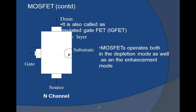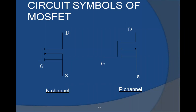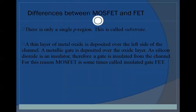MOSFET operates both in the depletion mode as well as in the enhancement mode. This is the circuit symbol of N-channel and P-channel — you can see the arrow marks are opposite to each other; this is the difference between MOSFET and JFET. There is only a single P region called a substrate. A thin layer of metal oxide is deposited over the left side of the channel, and the metallic gate is deposited over the oxide layer. Silicon dioxide acts as the insulator, keeping the gate insulated from the channel.